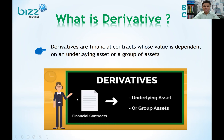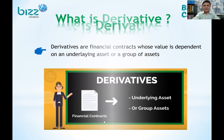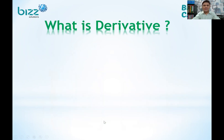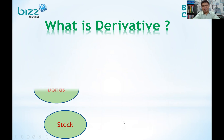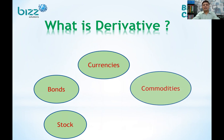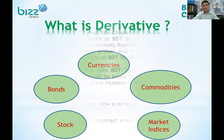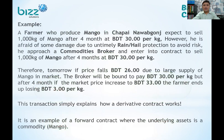This is basically a financial contract. The value of the underlying asset — whether it is a stock, bond, currencies, commodities, or market index — determines the value of the derivative. I will simplify this with a practical example.